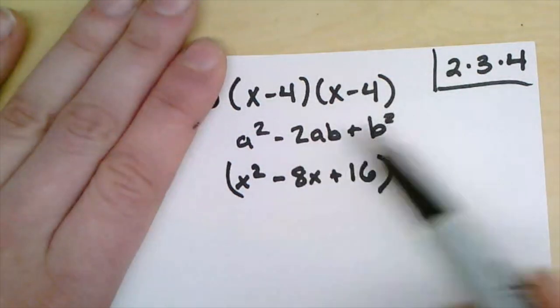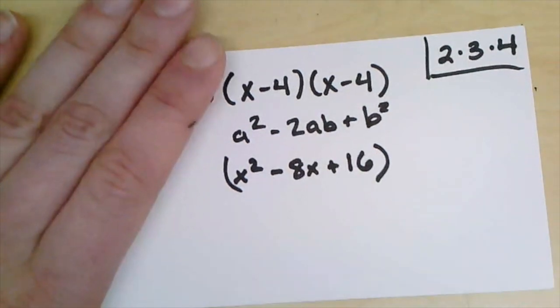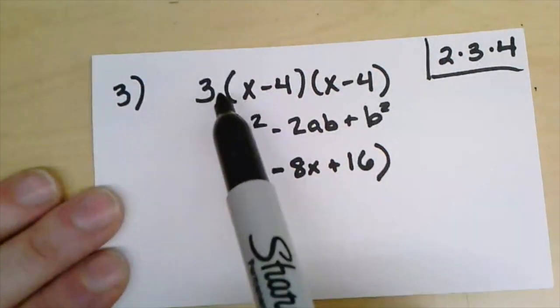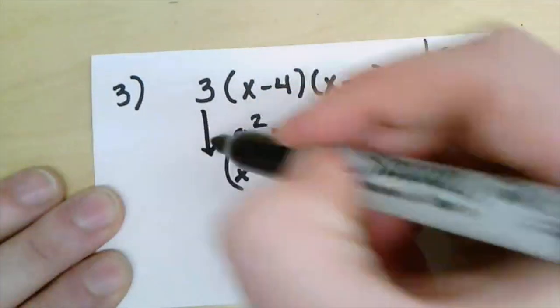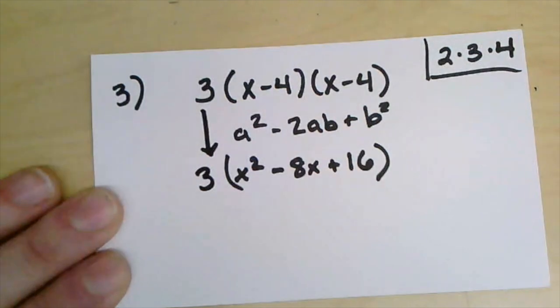I can use this pattern. If I don't remember that pattern I can always FOIL it out, that's no problem either. But I do need to remember still that this 3 needs to come down into the front because I still need to multiply by that.